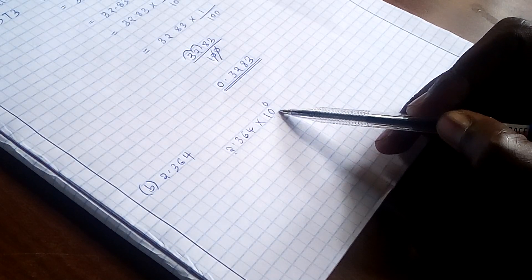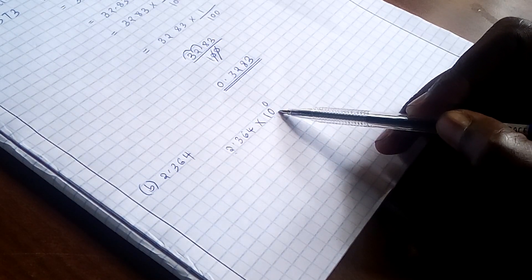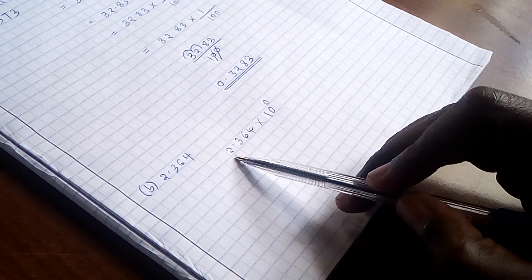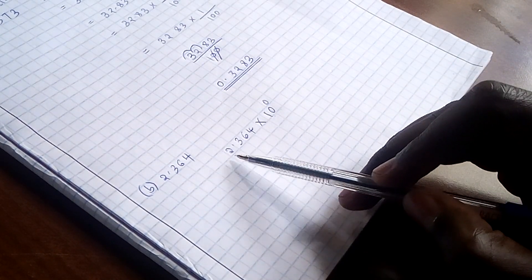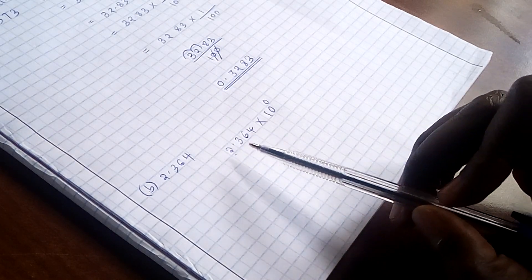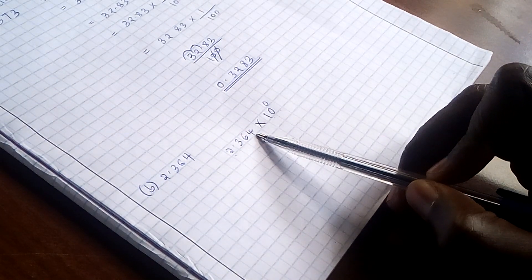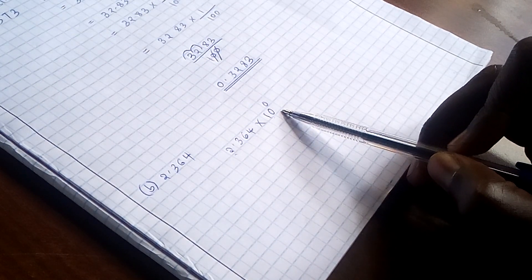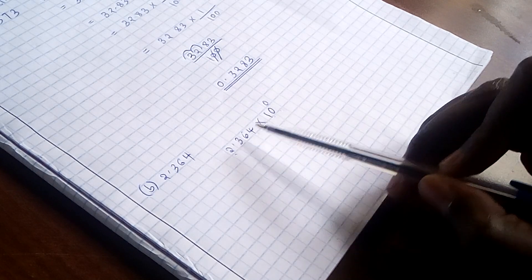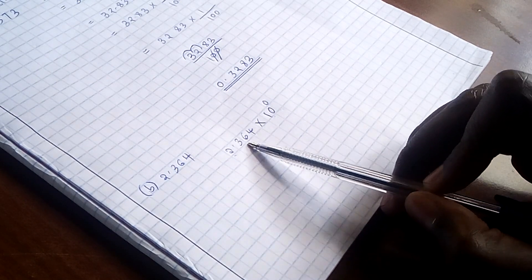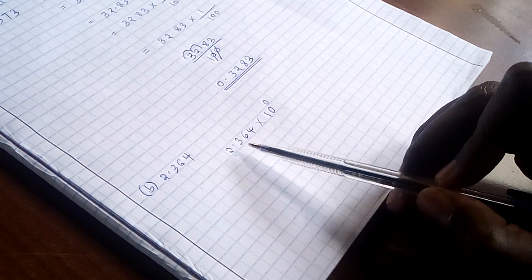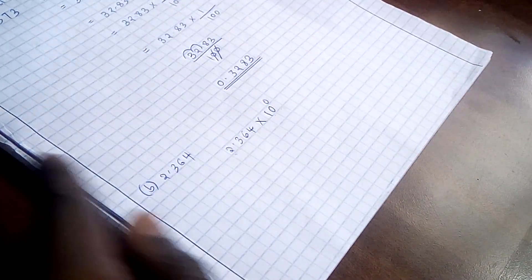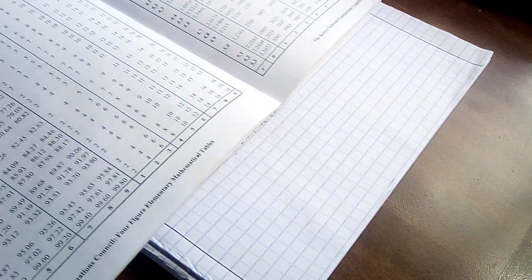It is already in its standard form. And straight away we are going to look at the square of this particular number. So the square of this is what we are going to get from our table. What is the square of 2.364 from our table?